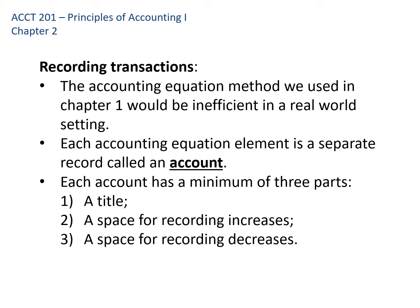We record transactions using the accounting equation, but if we use the accounting equation like we looked at in chapter one, that would be really inefficient in terms of recording transactions in a real world business. So we're going to do it in a different way that's more productive. Each accounting equation element is a separate account — accounts like cash, inventory, supplies, cars, trucks, and equipment. Each account has three parts: a title, a space to record increases, and a space to record decreases.